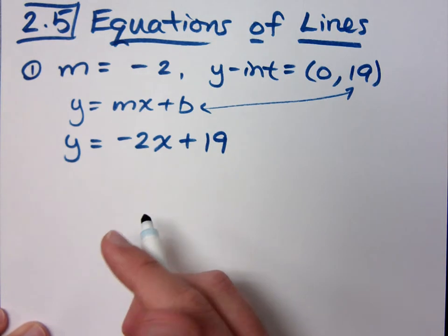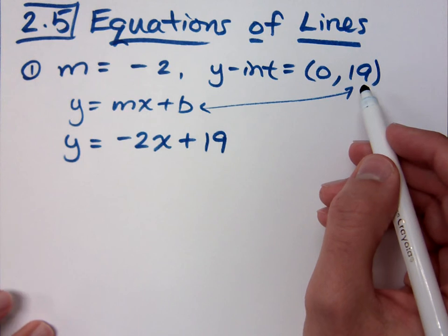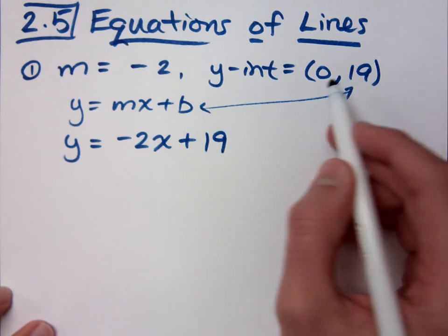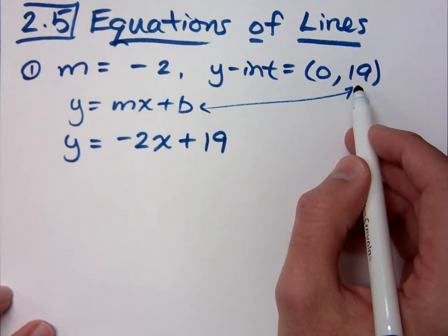The thing that you have to watch out for is not getting sucked into thinking that the y-coordinate is always your y-intercept. If this x-coordinate is anything other than 0, then you most definitely do not have the y-intercept. Are you with me on that?